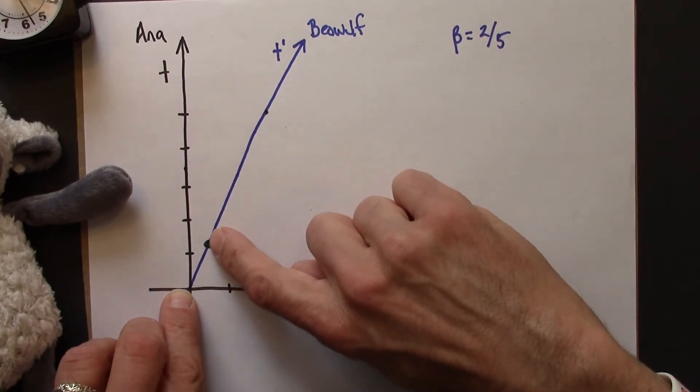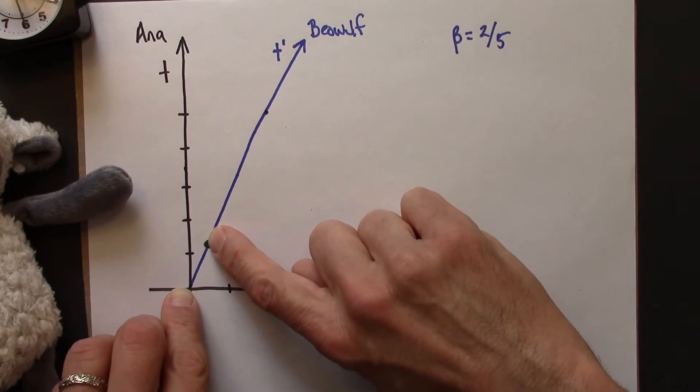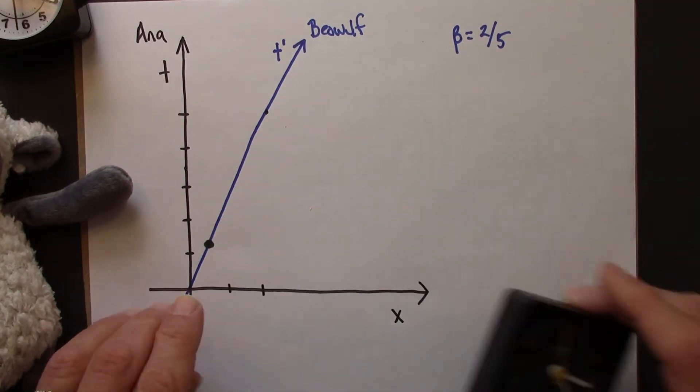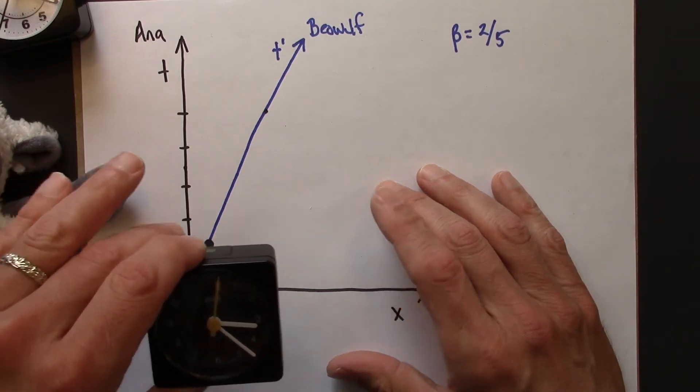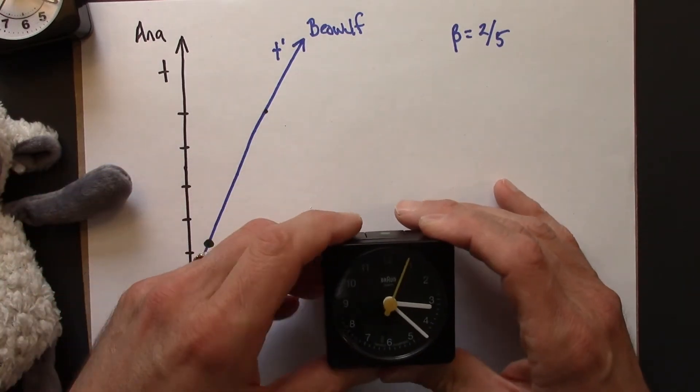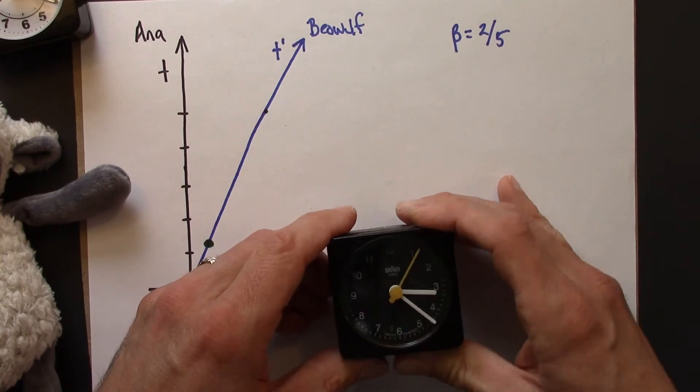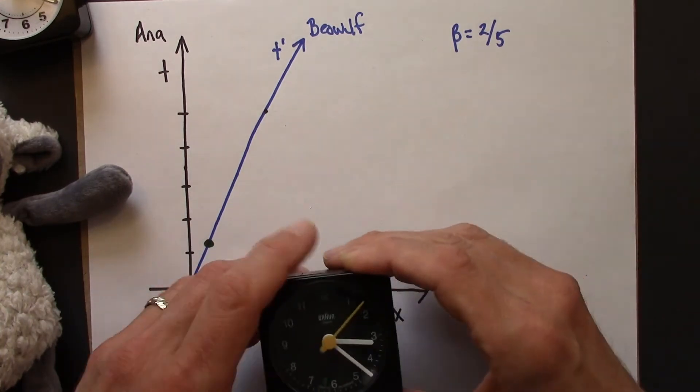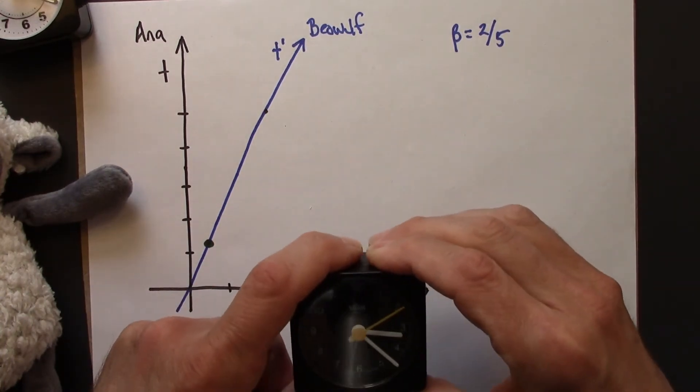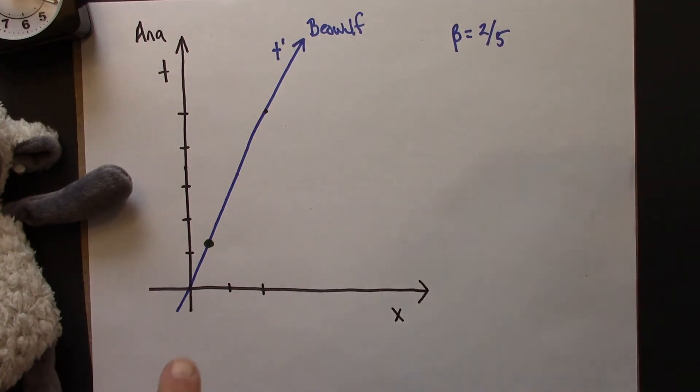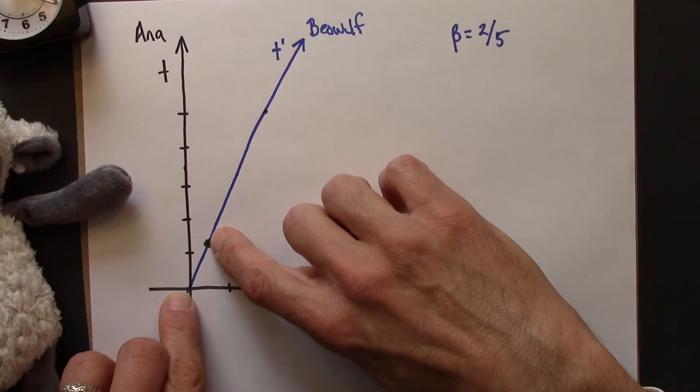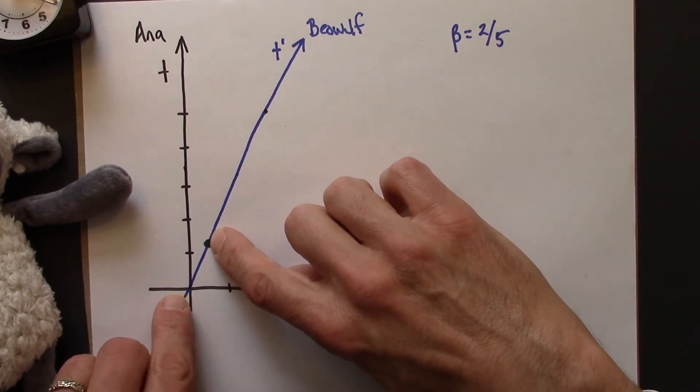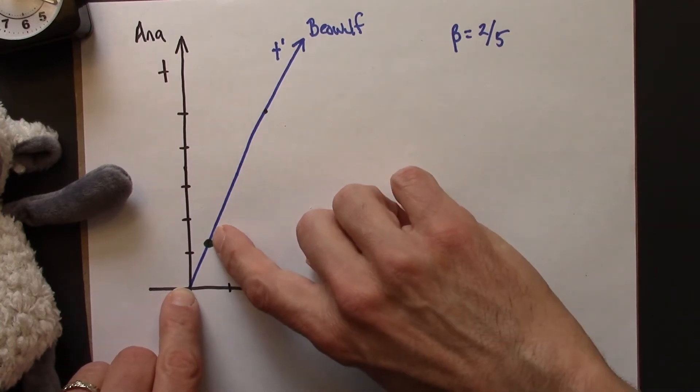which is 1 second according to Beowulf, that's a space-time interval. There are two events. Beowulf's clock is at 0, moves a little bit. Beowulf's clock ticks 1. This is a single inertial clock, moving at a constant speed, present at both events. So this has a space-time interval of 1. The interval from the origin to this green event is 1.